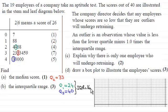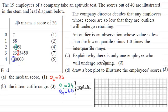For the next part of this question, we're told that the company director decides that any employees whose scores are so low that they are outliers will undergo retraining. An outlier is an observation whose value is less than the lower quartile minus 1.0 times the interquartile range. For part C, we've got to explain why there is only one employee who will undergo retraining. Then for part D, draw a box plot to illustrate the employee's scores. If you'd like to have a go, pause the video now.